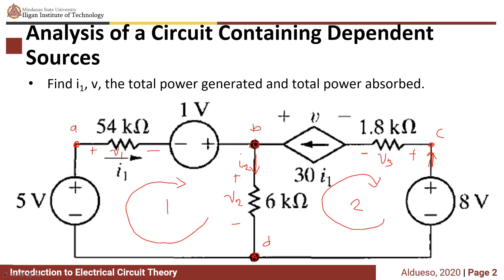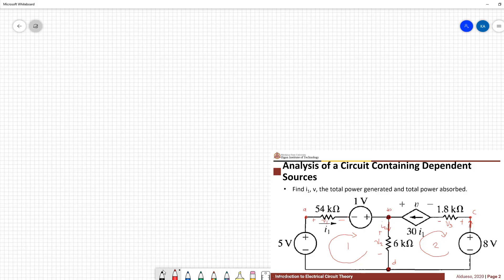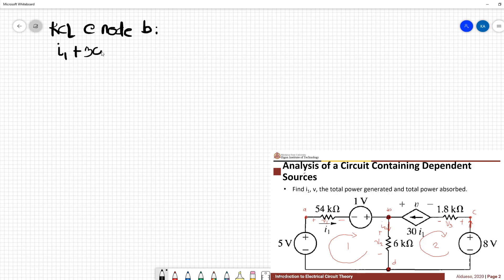So again, we need to analyze the circuit to know where to apply KCL and KVL, from which we can get the most information. This is similar to the last problem, so we need to apply KCL at node B. Applying KCL at node B, we have I1 plus 30I1 minus I2 equals 0, which gives us I2 equals 31I1. This is equation 1.